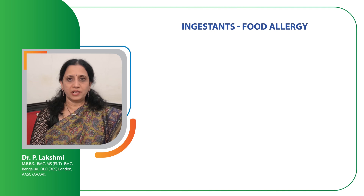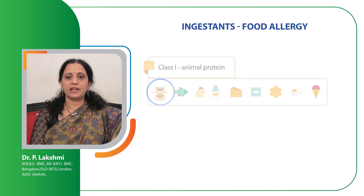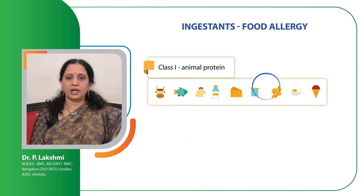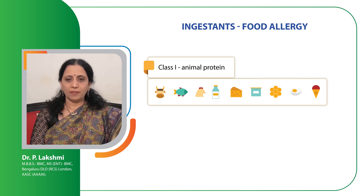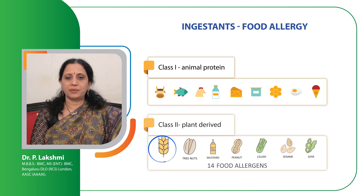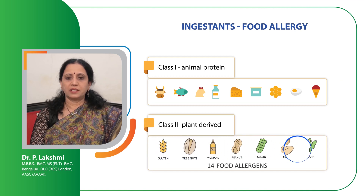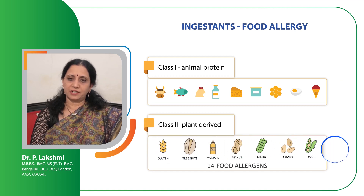Some of the common food allergens are of animal origin or plant origin. Animal proteins include meat, chicken, prawn, eggs, milk, etc. Some of the common plant-derived food allergens include peanut, gluten, celery, sesame, etc.